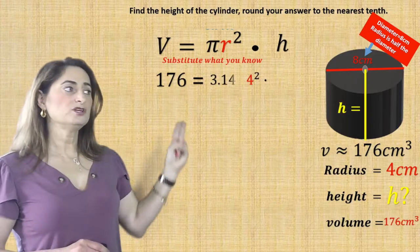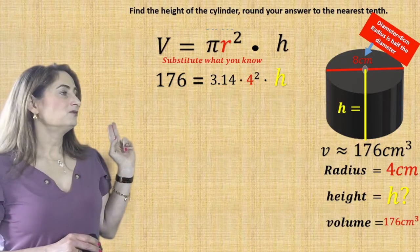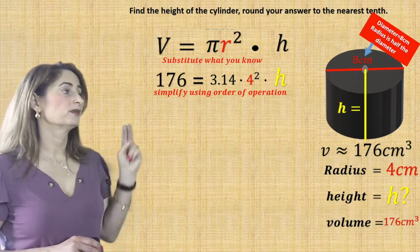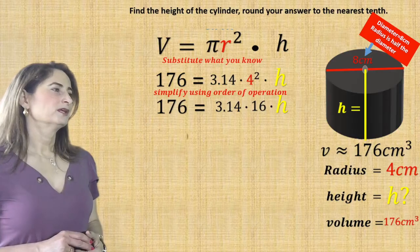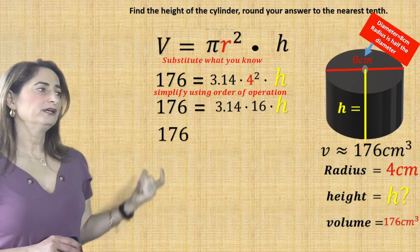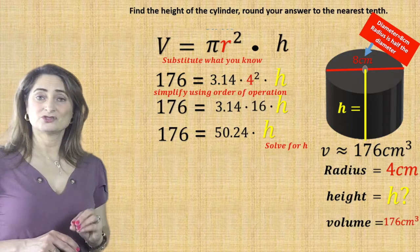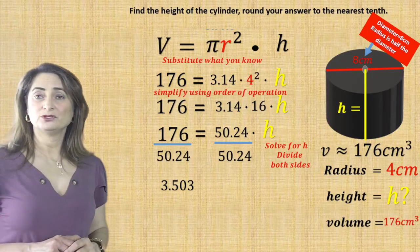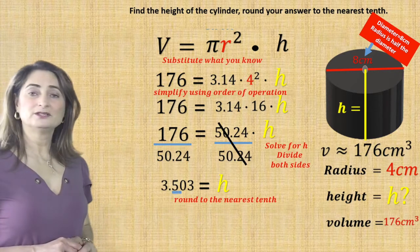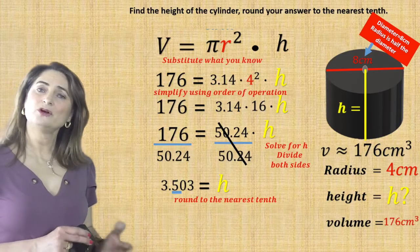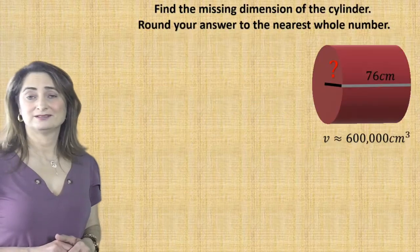Substitute those numbers in the equation: 176 equals 3.14 times r squared — r is 4 — times h. Simplify using order of operations: square the radius first, so 4 squared is 16. Then multiply 3.14 times 16, which is 50.24. So 176 equals 50.24 times h. To isolate h, divide both sides by 50.24. You get h equals 3.503. Rounding to the nearest tenth: the tenth place is 5, and since the hundredth place is less than 5, it stays the same. So the height is approximately 3.5 centimeters.